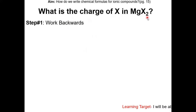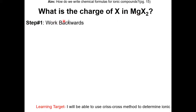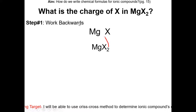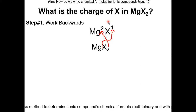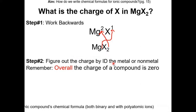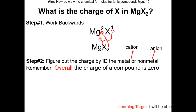What is the charge of X in MgX2? X is an unknown element, and MgX2 is a neutral ionic compound. Step 1: we work backwards by crisscrossing backwards. We get charges, but notice we don't know which one's positive and which one's negative. In an ionic compound, one ion must be positive and the other has to be negative. Step 2: figure out the charge by identifying the metal or non-metal. The metal will be a positive ion and the non-metal will be a negative ion. Since magnesium is a metal, magnesium will have a positive 2 charge, and X will have a minus 1 charge.